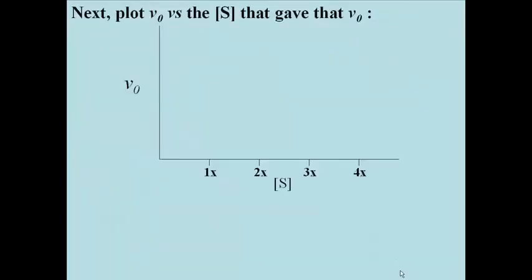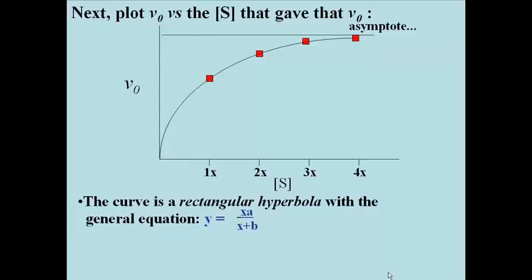The next thing we'll do is plot those slopes, or V0 meaning the initial reaction rate, versus the substrate concentration that gave that initial reaction rate, and here's the curve you would get. The curve is approaching a maximum asymptotically. In fact, the curve is a rectangular hyperbola with the general equation Y equals XA divided by X plus B.